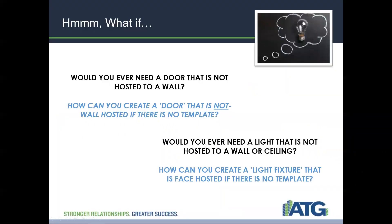Here's another one: would you ever need a light that is not hosted to a wall or a ceiling? Some of you may have already run into this — especially if you've worked with projects with exposed structure where there is no Revit ceiling. Ceiling-hosted light fixtures give you all kinds of warnings. You can't attach them to a soffit, the underside of a roof deck, the face of beams, or the underside of millwork. A ceiling-hosted light fixture must have a Revit ceiling.